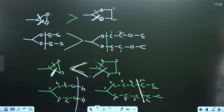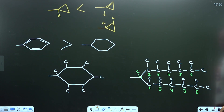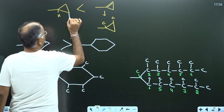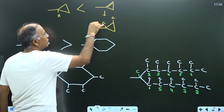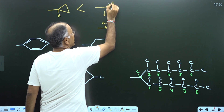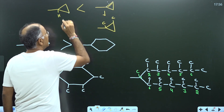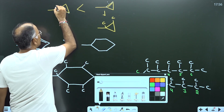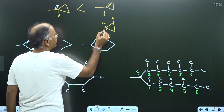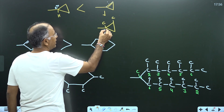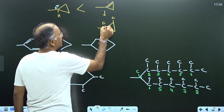Now if you have to compare these two groups, first we have to break the pi bond. We will write this atom here and this atom here, and we get this result. This is a two-degree carbon, this is a two-degree carbon, and this is a three-degree carbon. Two-degree versus three-degree: the three-degree is given high priority.